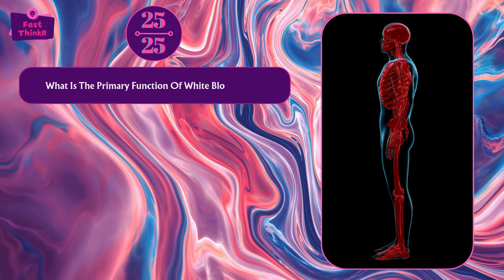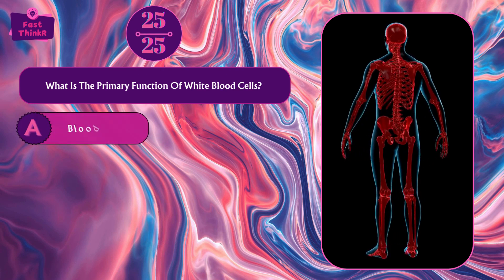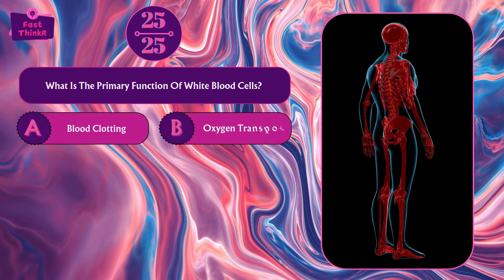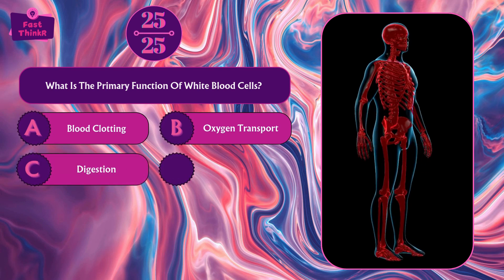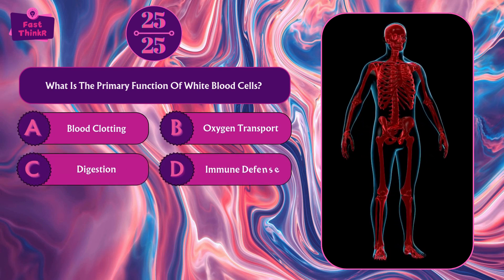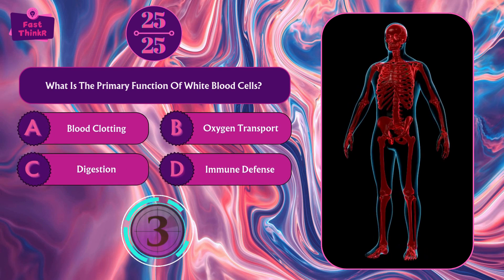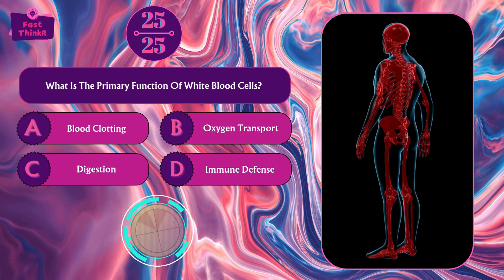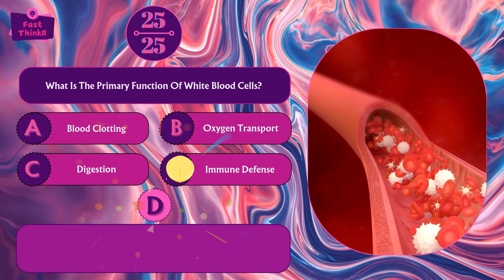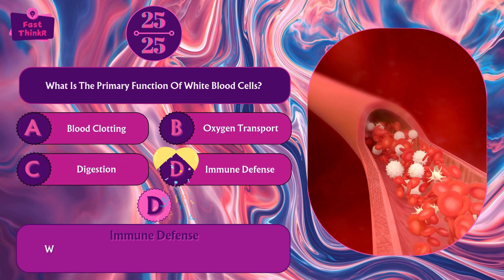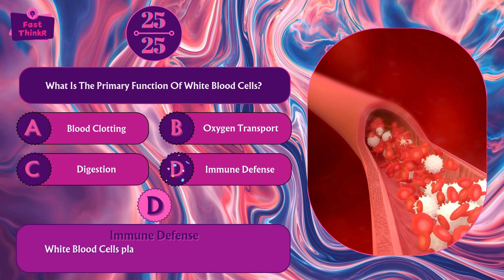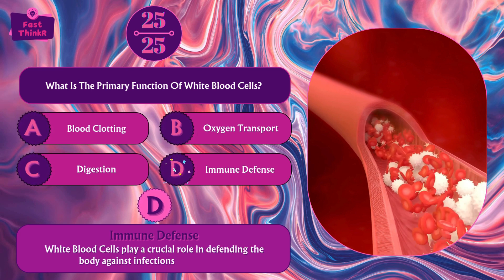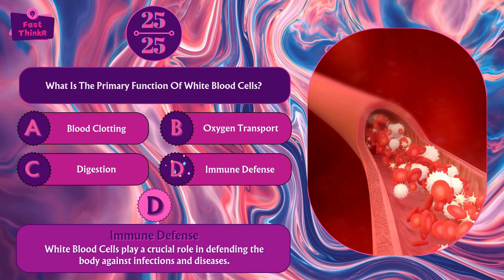What is the primary function of white blood cells? Blood clotting, oxygen transport, digestion, or immune defense? Option D — immune defense. White blood cells play a crucial role in defending the body against infections and diseases.